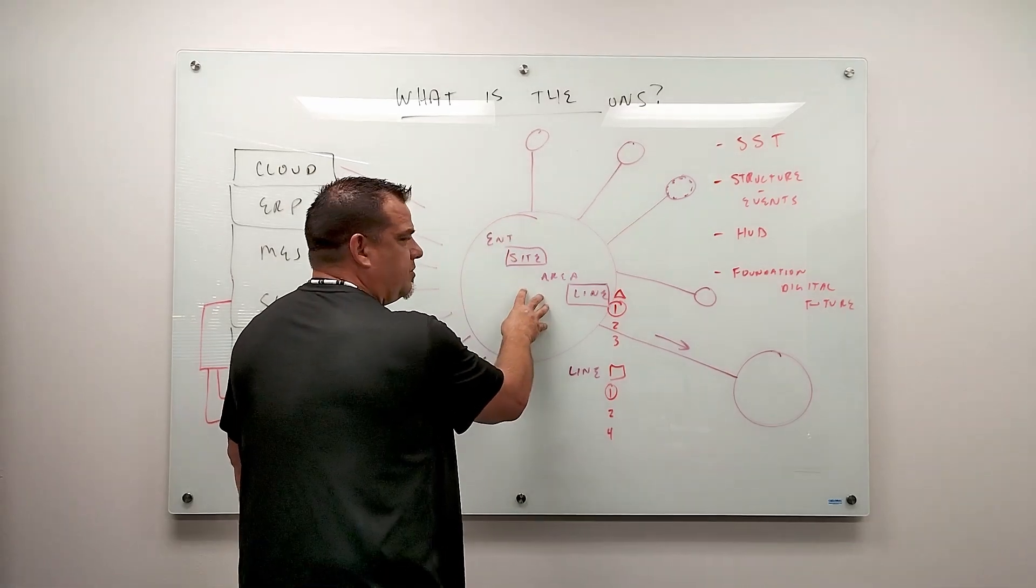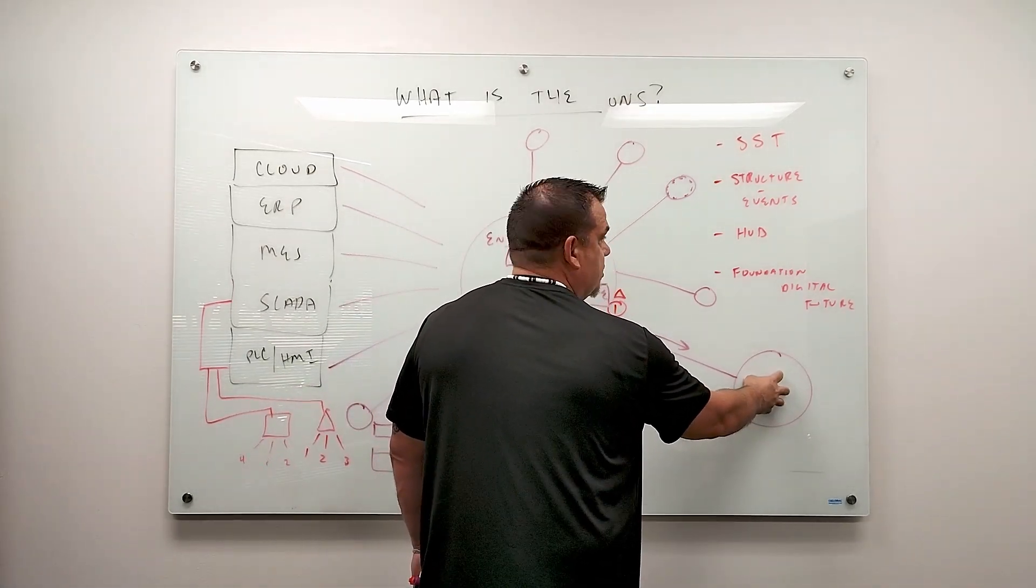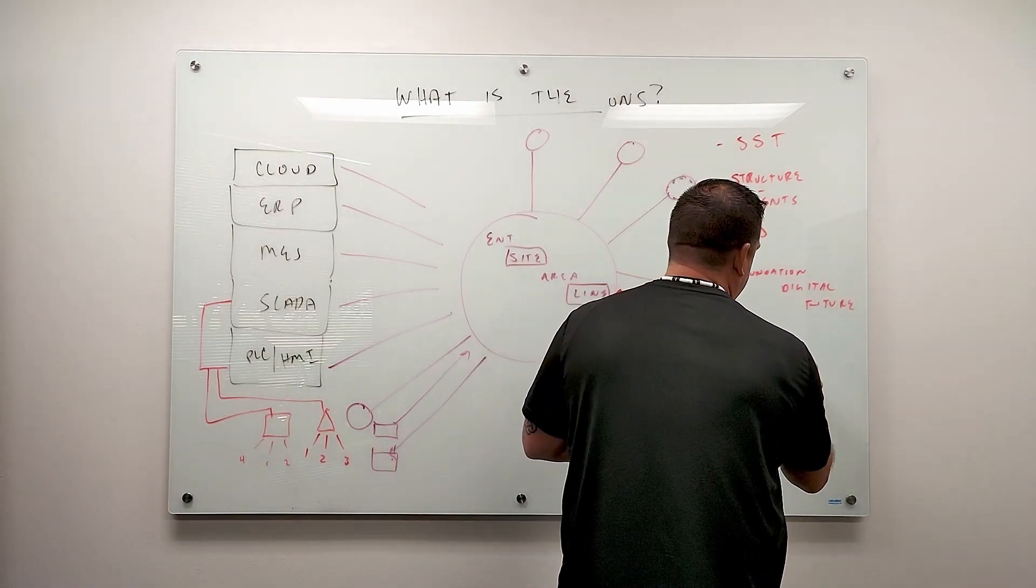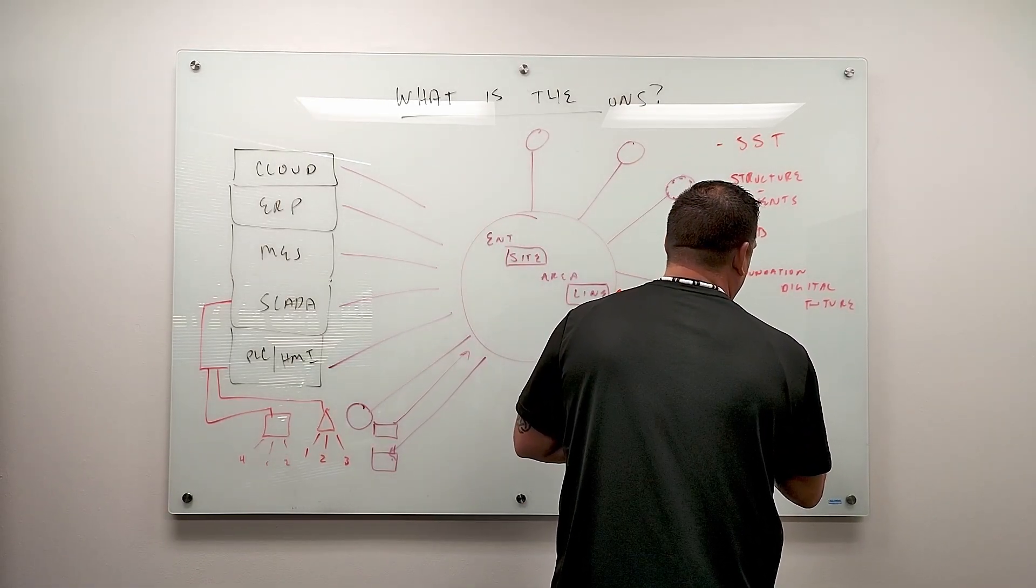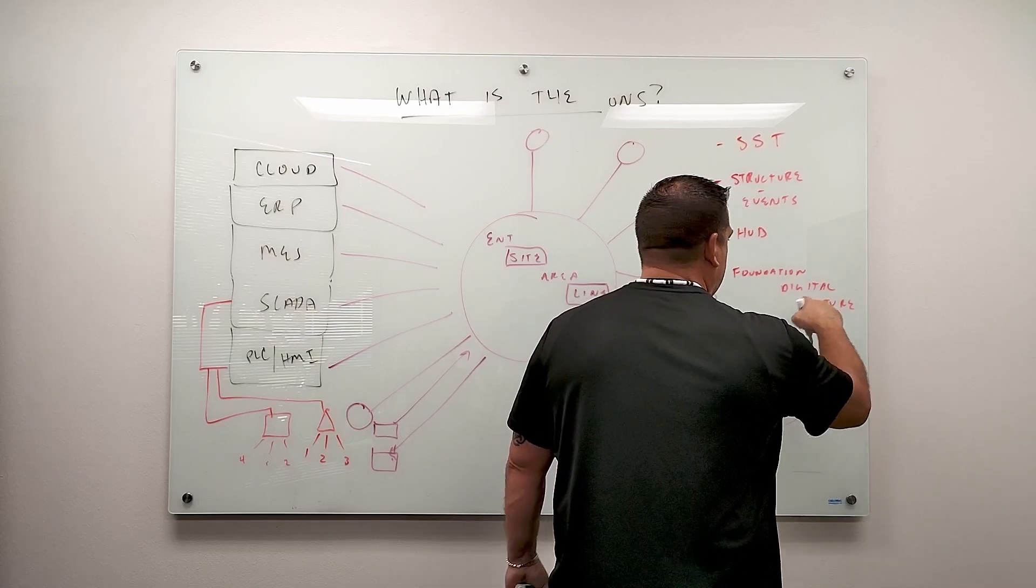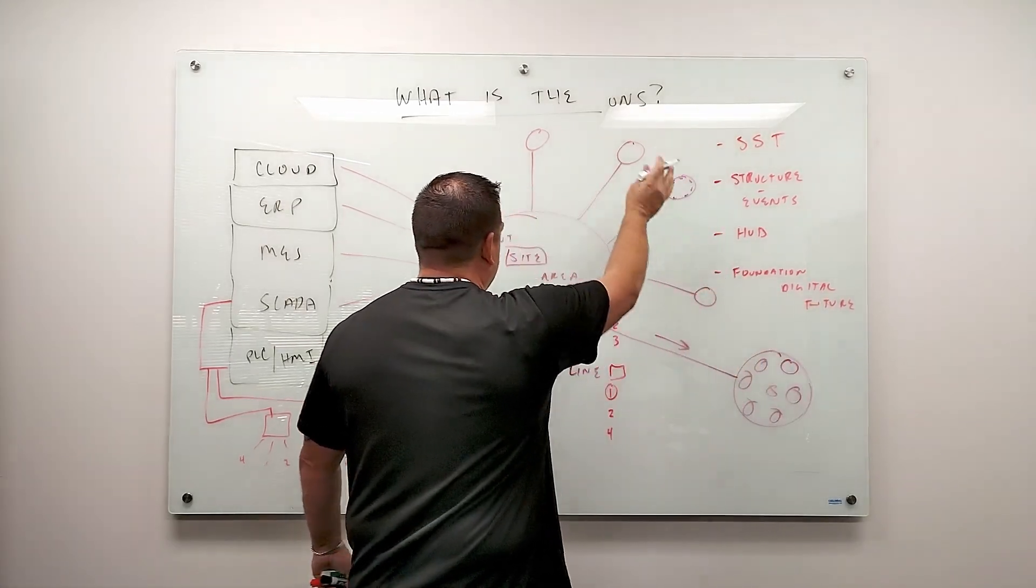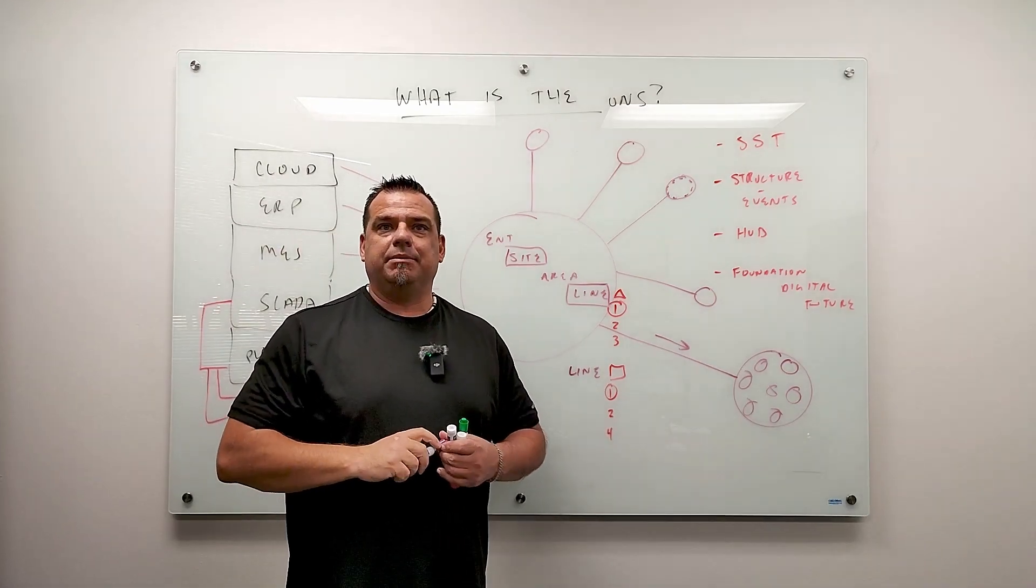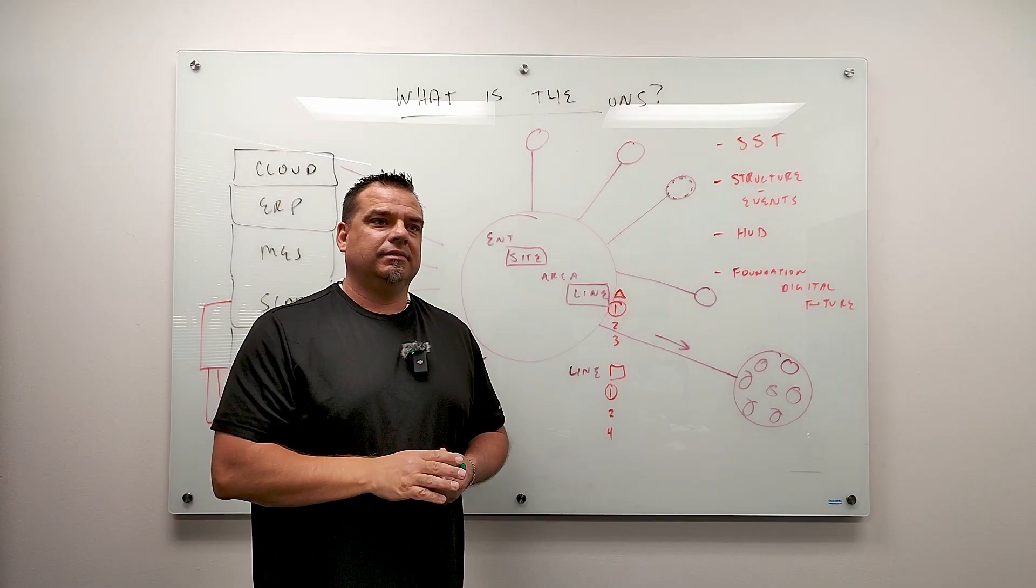In general, this is EMQX right here. In general, this is ignition right here. In general, these circles are being built inside the ignition platform. Okay. On top of this digital foundation, which is all the purple stuff. That is the unified namespace. Okay. All right. Thanks for watching.